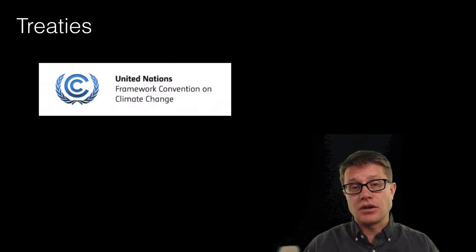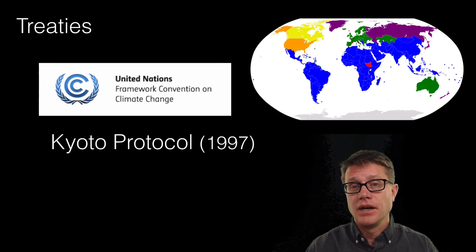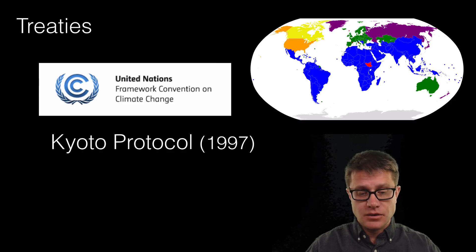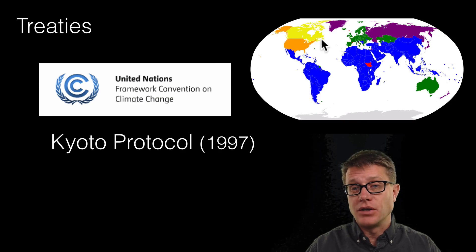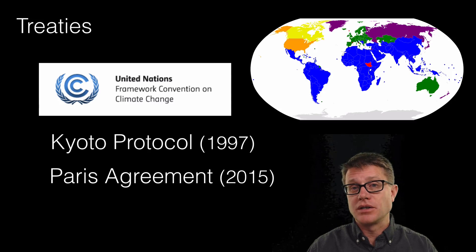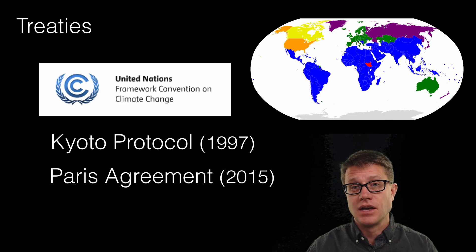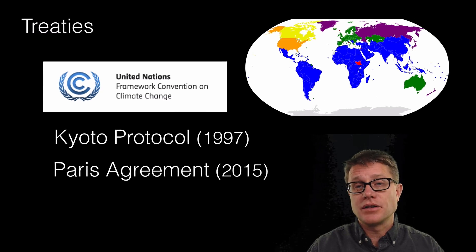So what do we do? Countries are coming together because this is a global problem — no one owns the atmosphere, we all own it together. The first was the Kyoto Protocol, a reduction in greenhouse gases where only the green countries were legally bound. The US did not ratify it and Canada pulled out after a year. In 2015, the Paris Agreement had all these countries making pledges to reduce greenhouse gases, with the goal of keeping the change on our planet under 2 degrees Celsius going into the next century.